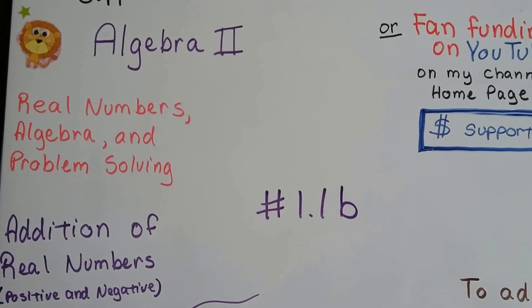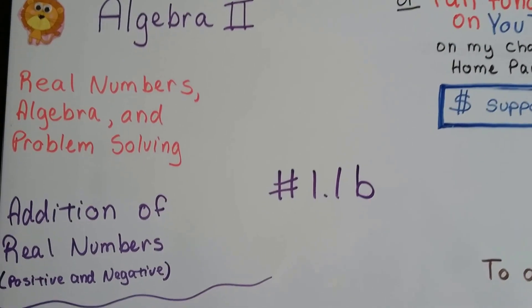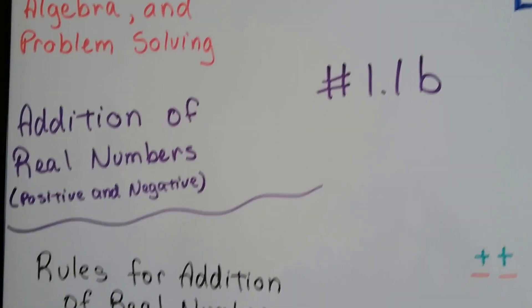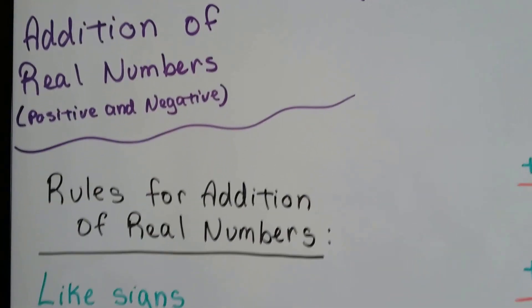Algebra 2, 1.1b, addition of real numbers, positive and negative.